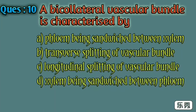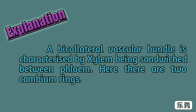Tenth one. A bicollateral vascular bundle is characterized by: A) phloem being sandwiched between xylem, B) transverse splitting of vascular bundle, C) longitudinal splitting of vascular bundle, D) xylem being sandwiched between phloem. Here D, xylem being sandwiched between phloem, is the right answer. A bicollateral vascular bundle is characterized by xylem being sandwiched between phloem, with two cambium rings. For example, Cucurbita.